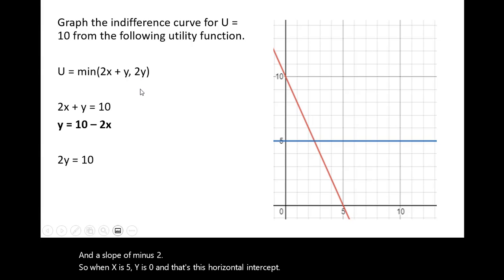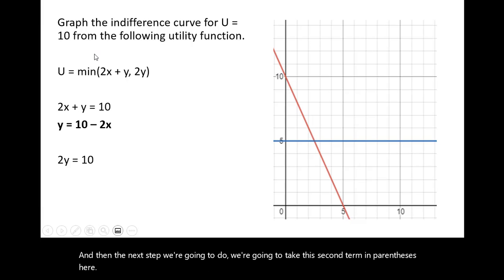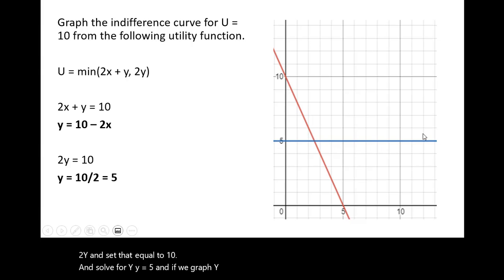And then the next step we're going to do, we're going to take this second term in parentheses here, 2y, and set that equal to 10 and solve for y. Y equals 5. And if we were to graph y equals 5, we'd get this blue line, vertical intercept of 5.